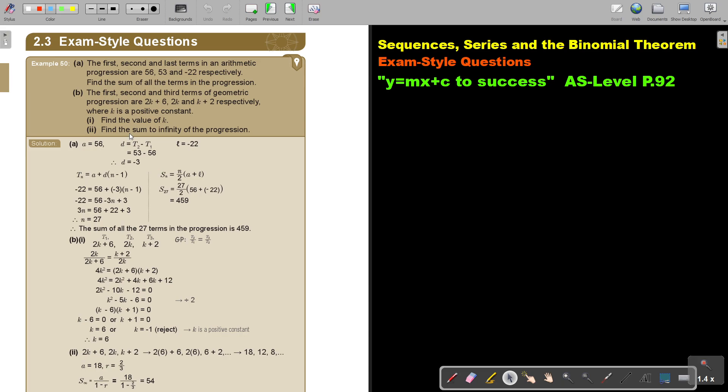Now if you have the second term and I know they tell me it's an AP, I can say t2 minus t1 to find d. So the front minus the back. So I have d and I have the last term.